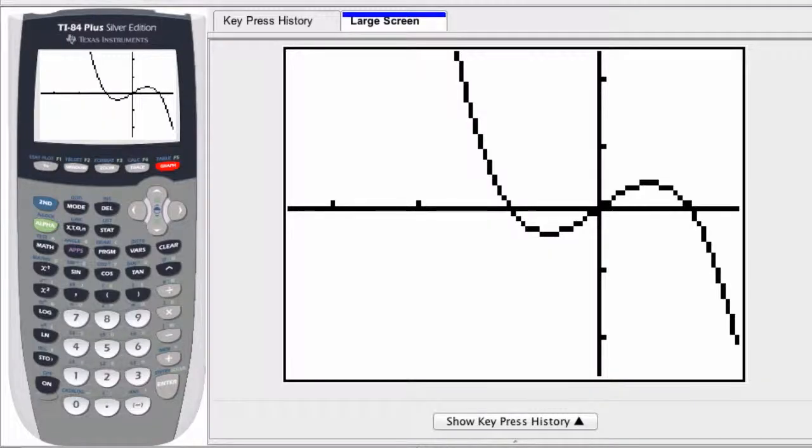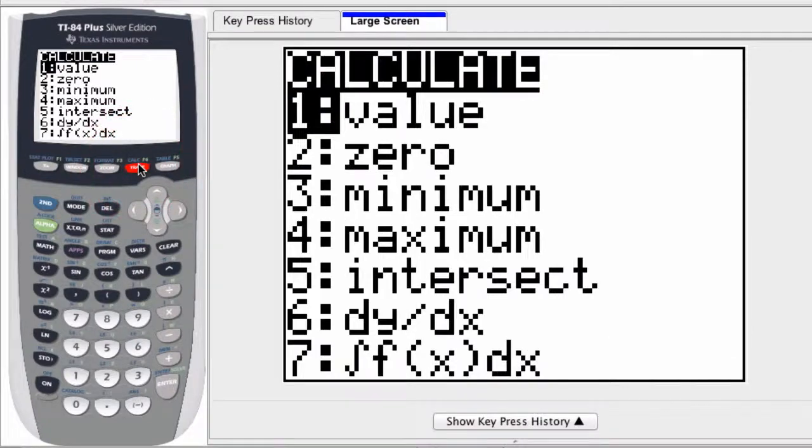In this video we're going over the zero option, which is available if you press second and trace this button right here when you're looking at your graph. Notice the second option says zero. Scroll down or press 2 to select it.